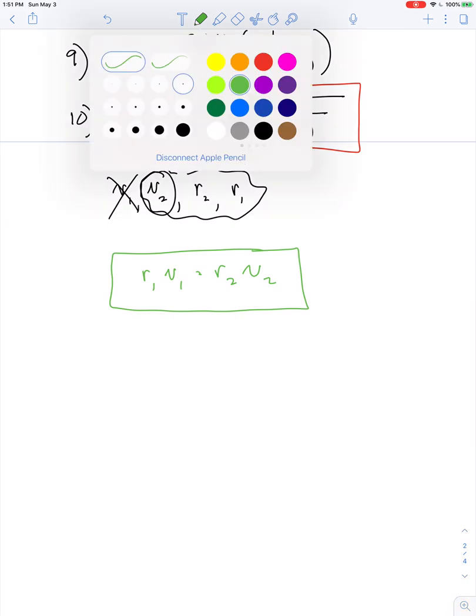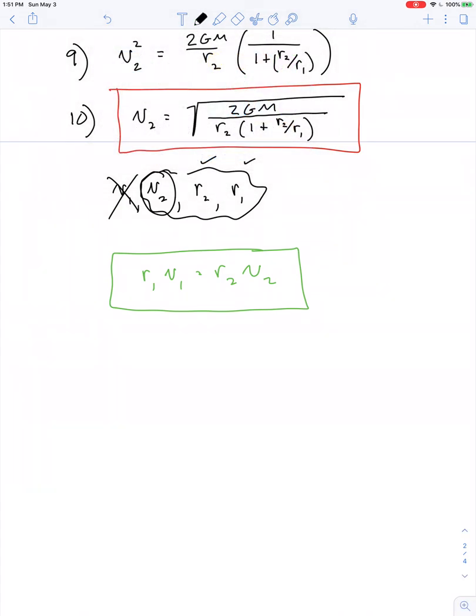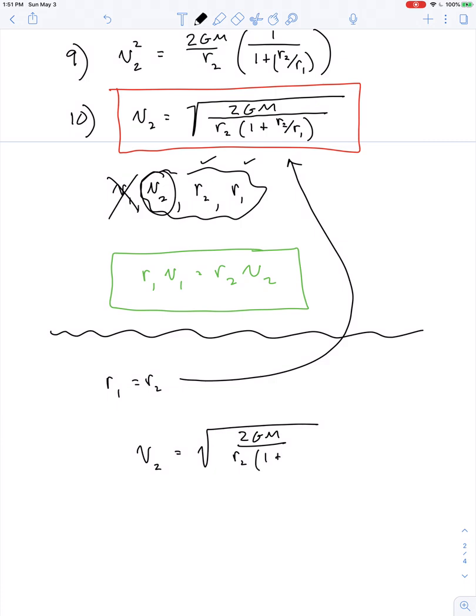What if we have the case of a circular orbit? Well, in the case of a circular orbit, R1 equals R2. And if we apply that to this equation, we have the speed at aphelion should be equal to the square root of 2 GM over R2 times the quantity 1 plus 1. But 1 plus 1 is 2, and it cancels this one. And now we're just left with V is equal to the square root of GM over R. But we know that as the equation for a circular orbit, so it seems like this equation we've derived makes reasonable sense.